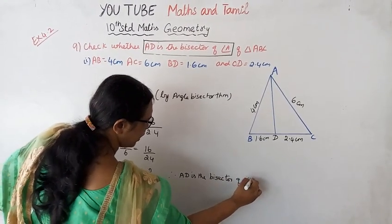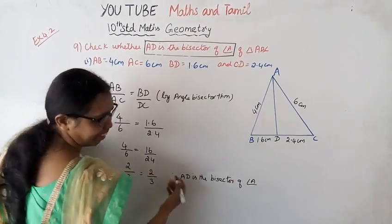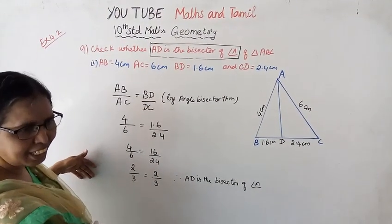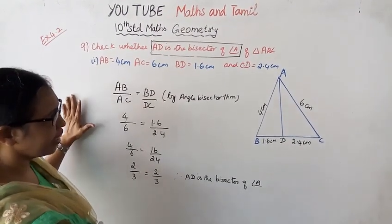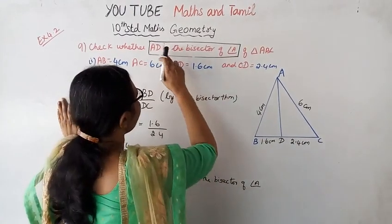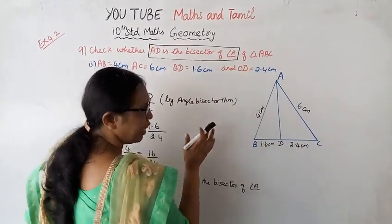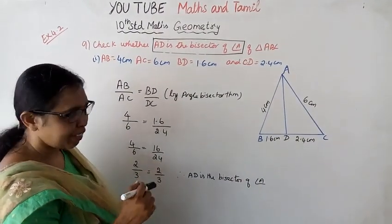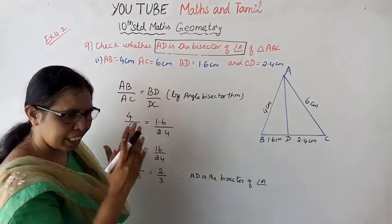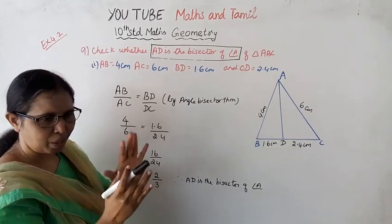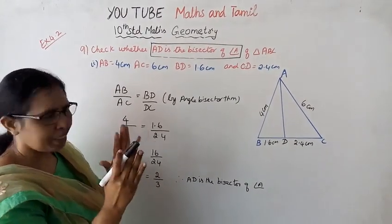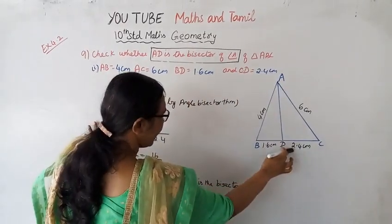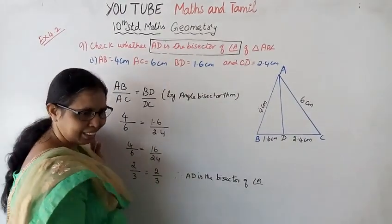Therefore, AD is the bisector of angle A. How easy is it? If you want to use the BPT theorem, you can see that D is parallel to BC. That confirms AD is the bisector of angle A.